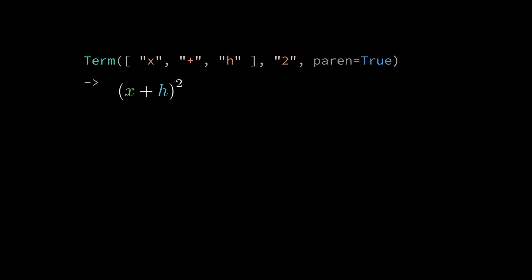This construction generates latex for x plus h squared. Again we use an array to pass in strings for x plus h. In this case paren equals true must be specified to ensure the entire x plus h appears squared and not just the h.